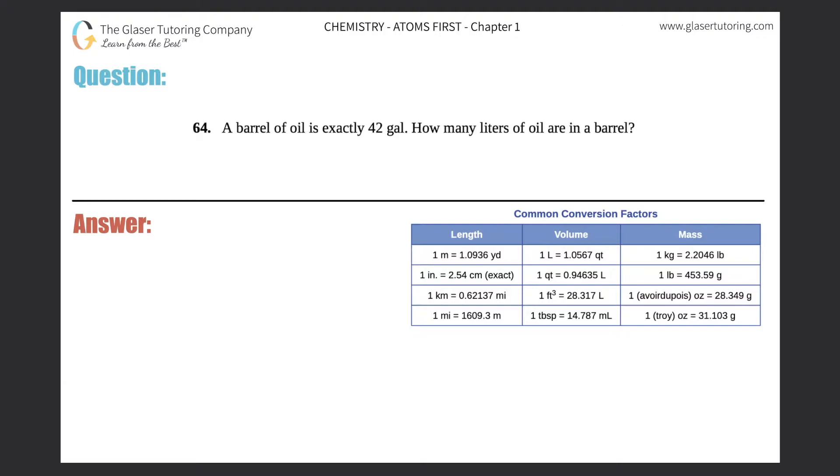Number 64: A barrel of oil is exactly 42 gallons. How many liters of oil are in a barrel? Okay, so direct conversion, right? They're asking for 42 gallons and we're trying to find out how many liters this is.